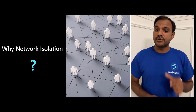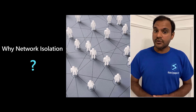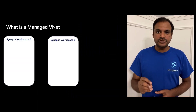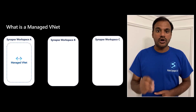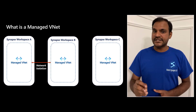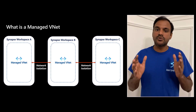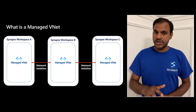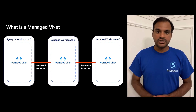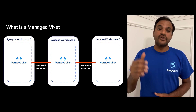Synapse provides this network isolation with what we call managed VNets. What is a managed VNet? Each Synapse workspace comes with its own virtual network called managed VNet. These managed VNets provide full network isolation between the Synapse workspaces. Managed VNets are provisioned and fully managed by Synapse behind the scenes. So, unlike your other VNets, you cannot see your managed VNet in your resource group.